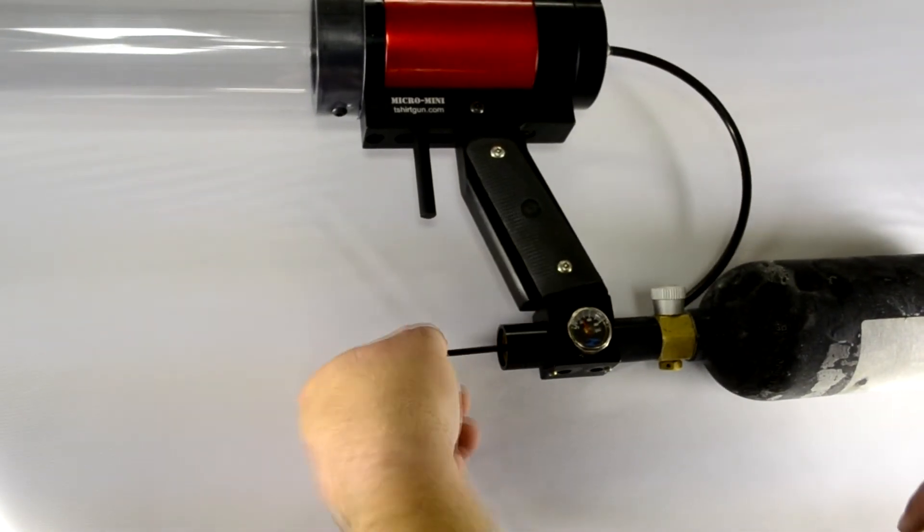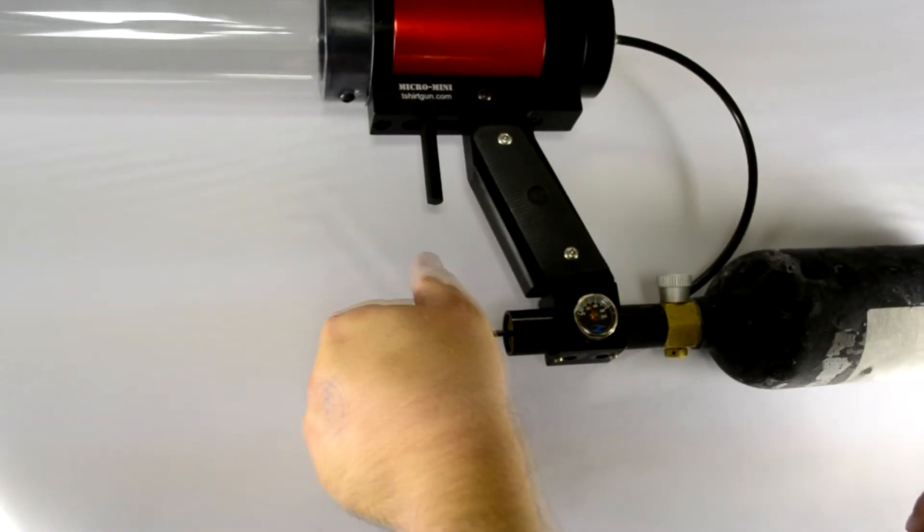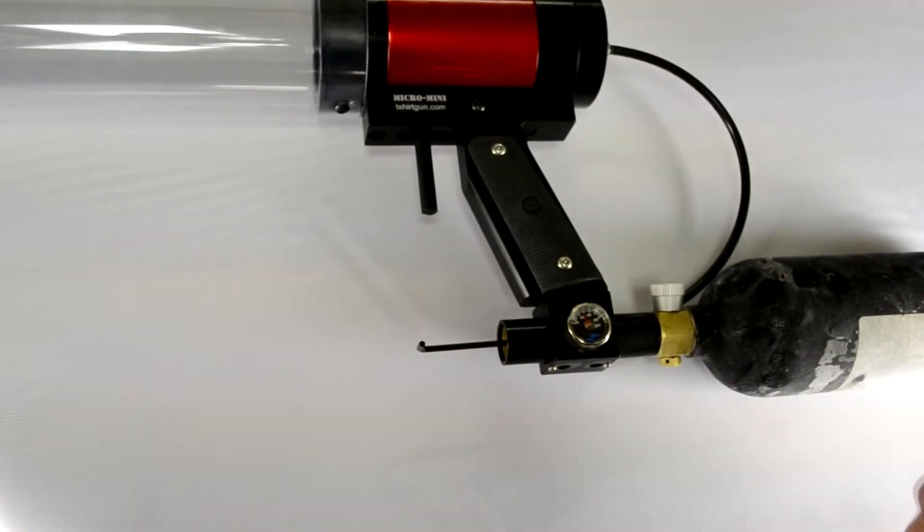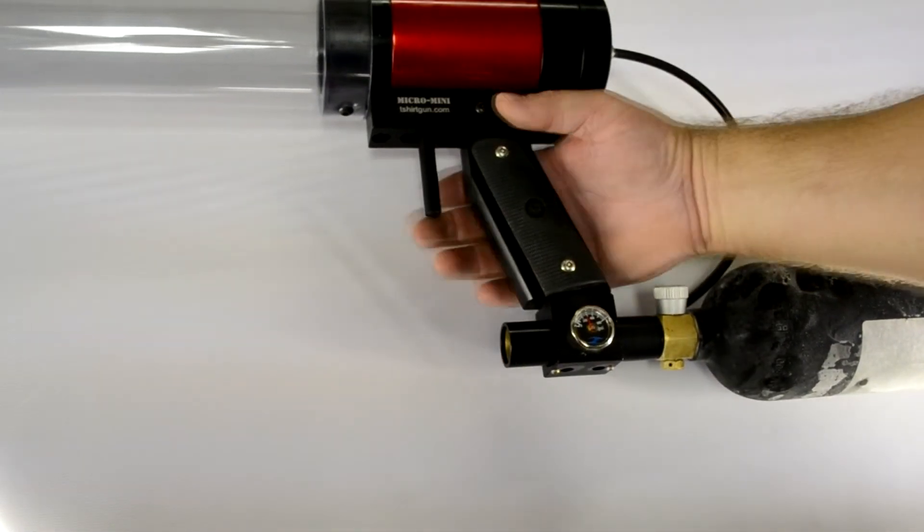When you see the needle move, begin to just barely inch it up a little bit at a time until the gauge reaches 300 psi, which is factory pressure.